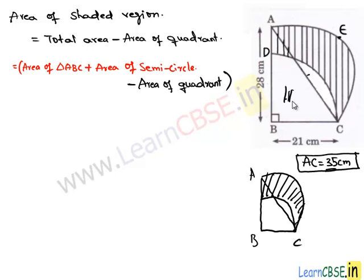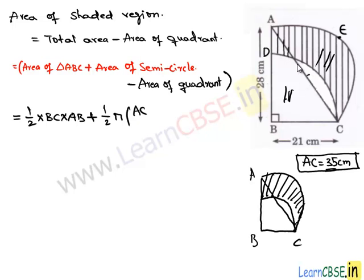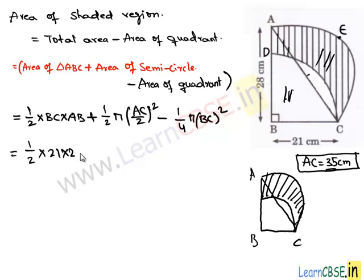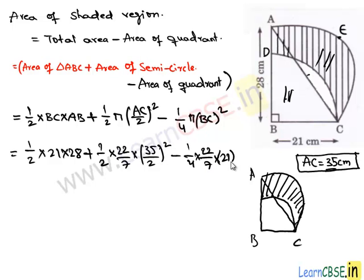Area of shaded region = area of triangle + area of semicircle − area of quadrant. Area of triangle = (1/2) × BC × AB = (1/2) × 21 × 28. Area of semicircle = (1/2)πR² where R = AC/2 = 35/2. Area of quadrant = (1/4)πR² where R = BC = 21. Using π = 22/7, we substitute the values.